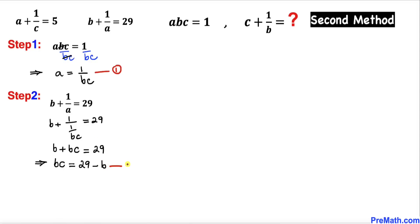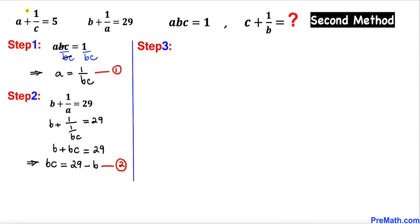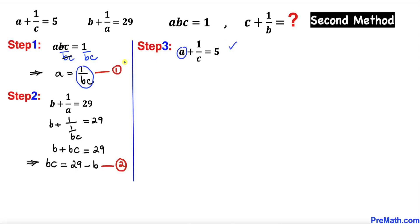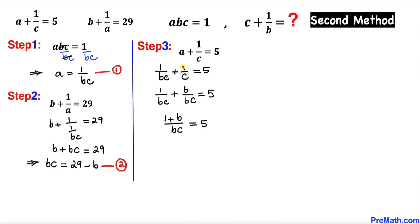Now focusing on a plus 1 over c equals 5. Replacing a with 1 over bc from equation 1, this becomes 1 over bc plus 1 over c equals 5. We can write 1 over c as b divided by bc, giving a common denominator bc. Now replacing bc in the denominator with 29 minus b from equation 2, we get 1 plus b divided by (29 minus b) equals 5.